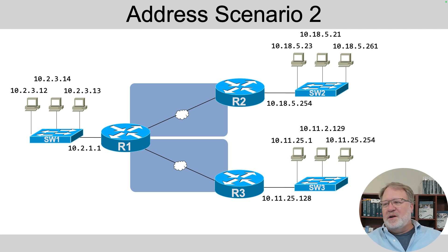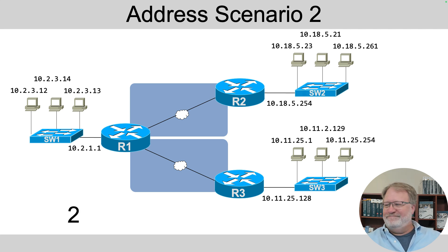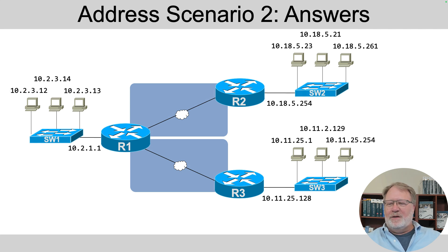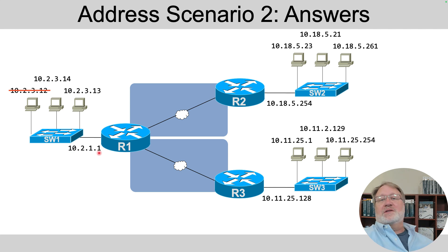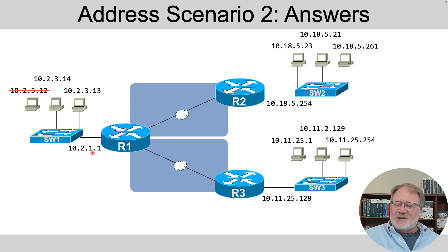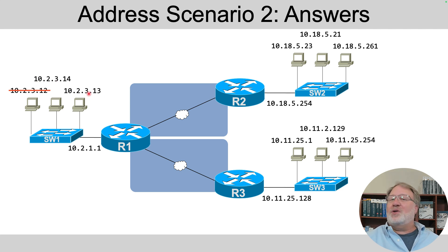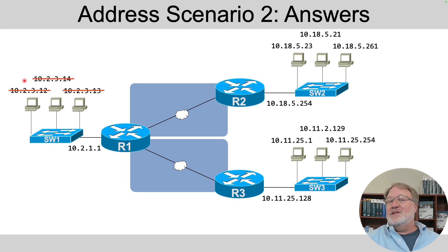Next up is scenario 2. I'll give you five seconds to pause so you can ponder which ones are rule breakers. On the far left, 10.2.1.1 is the router address, which per the rules is correct. The first three octets should be the same — 10.2.1 — but the PC addresses show 10.2.3, 10.2.3, and 10.2.3. The third octet is different in all three, so those are addresses in the wrong subnet.